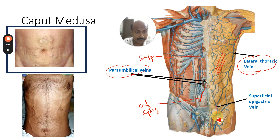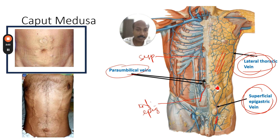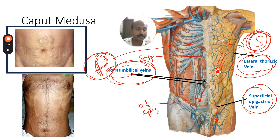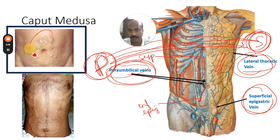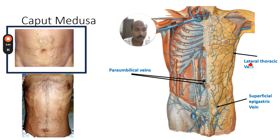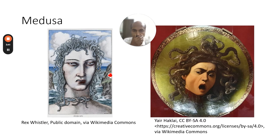The superficial epigastric vein drains into the great saphenous vein. These are systemic veins found in the superficial fascia of the anterior abdominal wall. The para-umbilical veins, draining into the portal venous system, communicate through a collateral system with these systemic veins — an example of a portosystemic shunt. The dilated veins visible on examination are these portosystemic shunts, where the para-umbilical veins anastomose with the lateral thoracic and superficial epigastric veins, creating tortuous veins around the umbilicus.